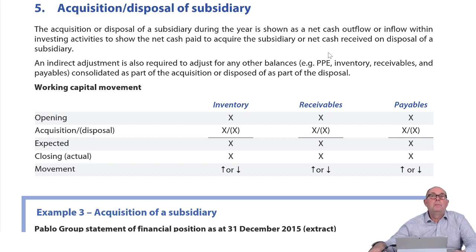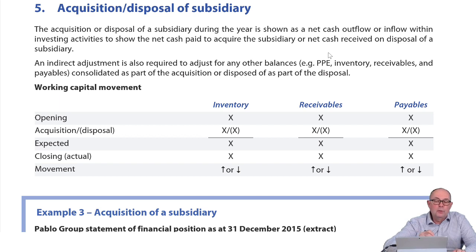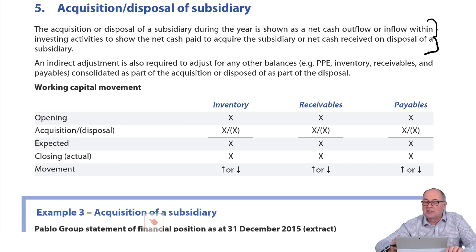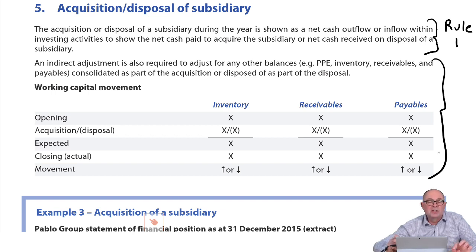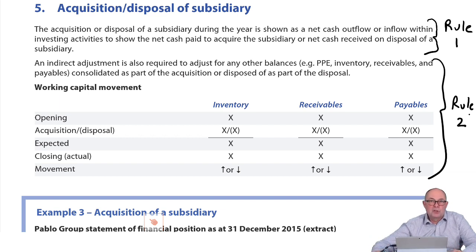There are two points that we have to sort out here. The first point, which is the most important one, is about dealing with the purchase and sale of the subsidiary itself — I'm going to call that Rule One. The second rule is about the impact of the subsidiary on the balances in the consolidated accounts — I'll call that Rule Two. We'll sort out Rule One first, as that's the most important.